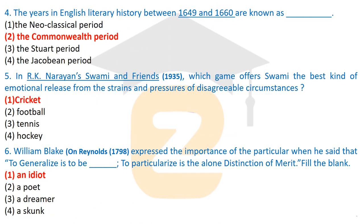Question four: the years in English literary history between 1649 and 1660 are known as the Commonwealth Period. During this period, Parliament ruled over England instead of the monarchy.